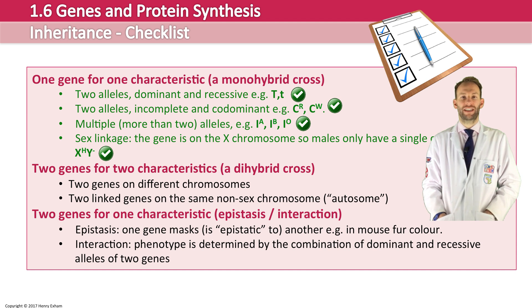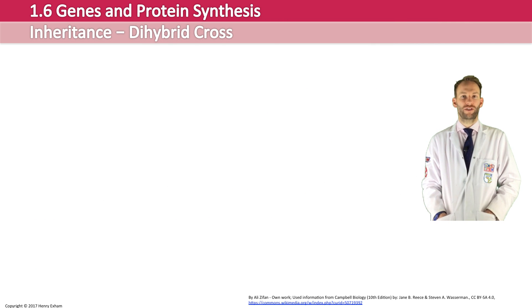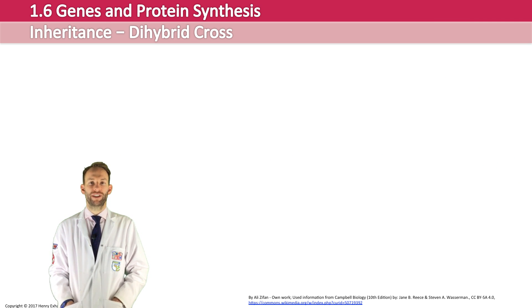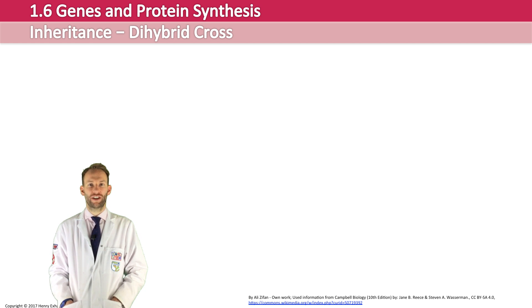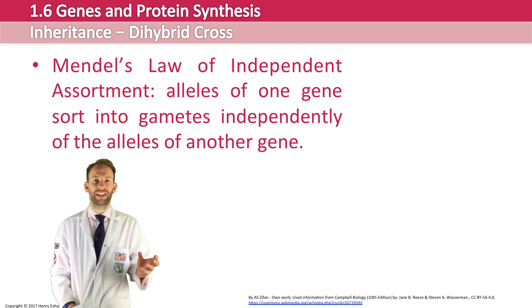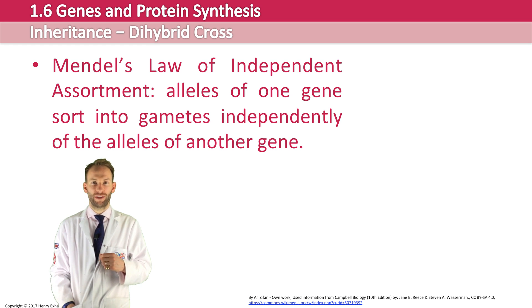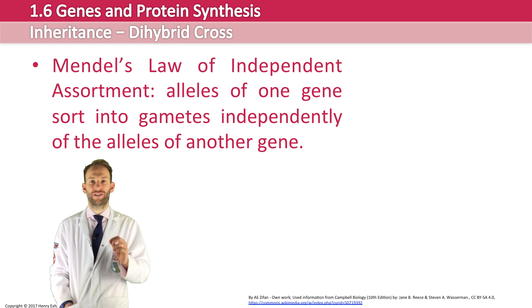Let's look at two genes and when two genes can code for two characteristics. Just as Mendel performed experiments looking at one gene, he also did lots of crosses looking at two genes. We call it a monohybrid cross when you look at one gene, and a dihybrid cross when looking at two genes. He found that genes were inherited independently of each other — one gene did not affect another. This gave rise to Mendel's law of independent assortment: the idea that alleles of one gene sort into gametes independently of the alleles of another gene.